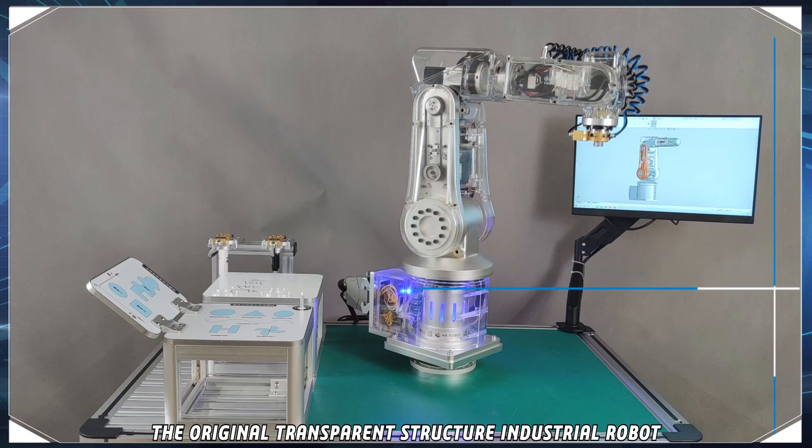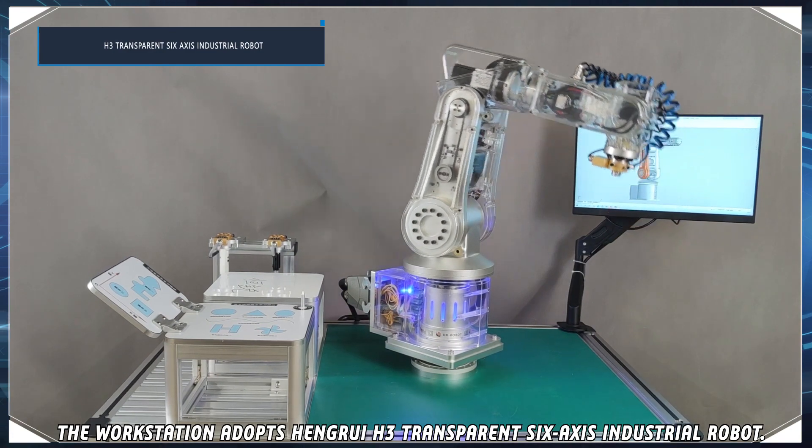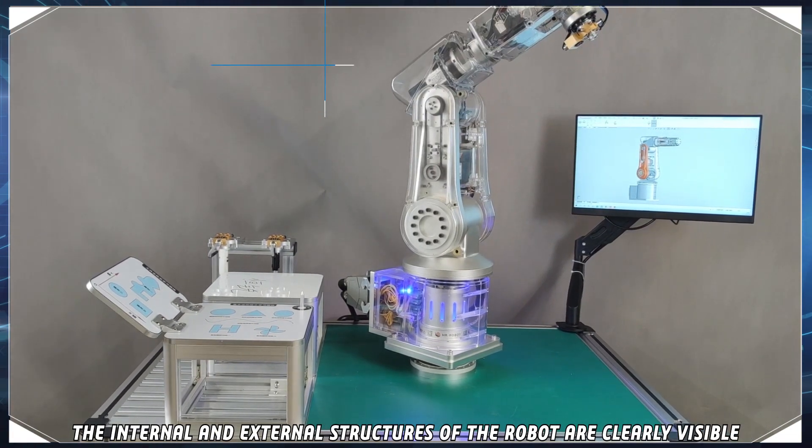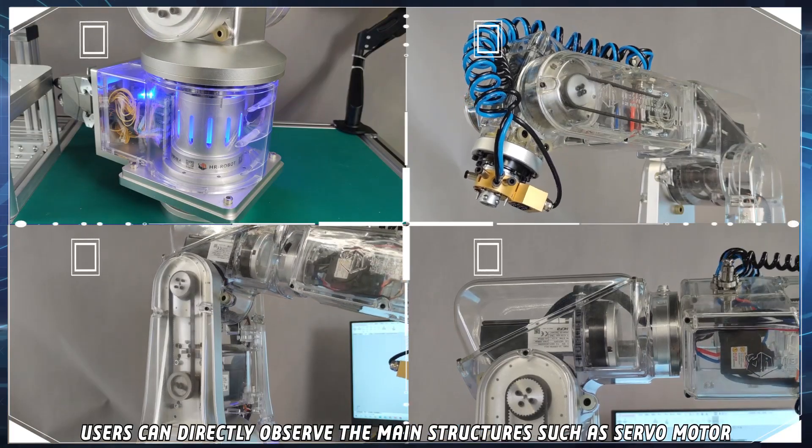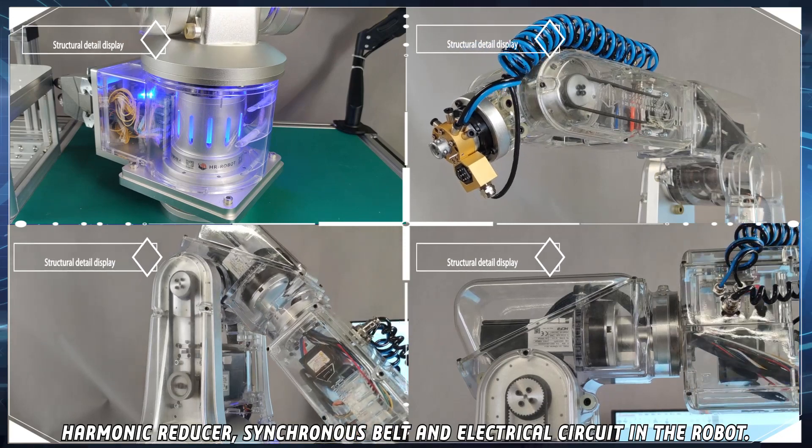The original transparent structure industrial robot can be disassembled and assembled at a glance. The workstation adopts Henry H3 transparent 6-axis industrial robot. The internal and external structures of the robot are clearly visible. Users can directly observe the main structures such as servo motor, harmonic reducer, synchronous belt, and electrical circuit in the robot.